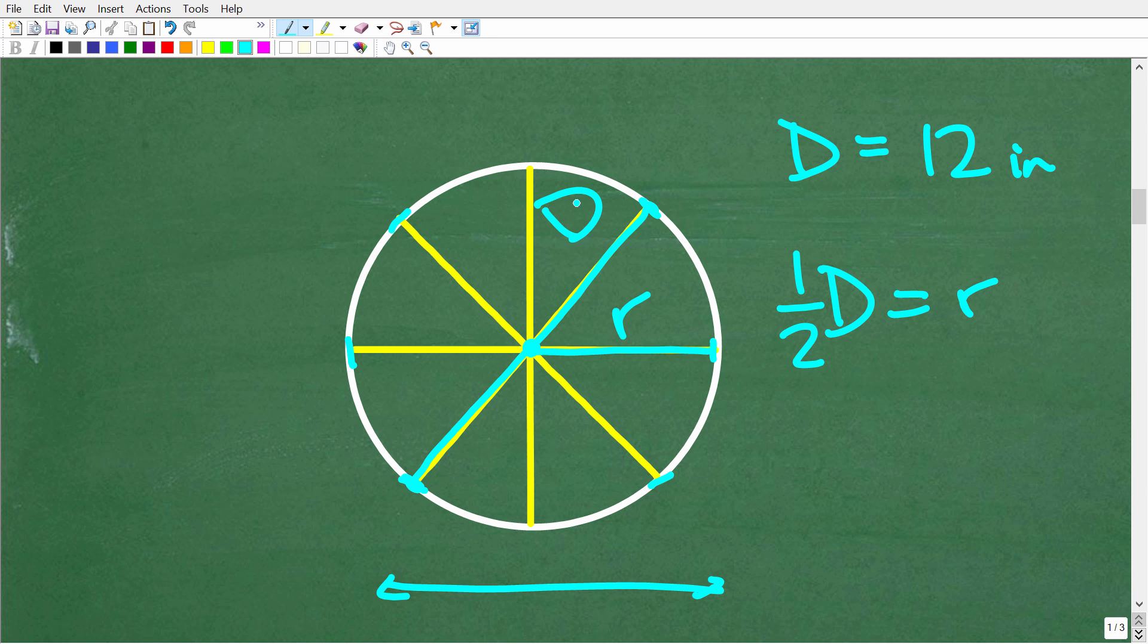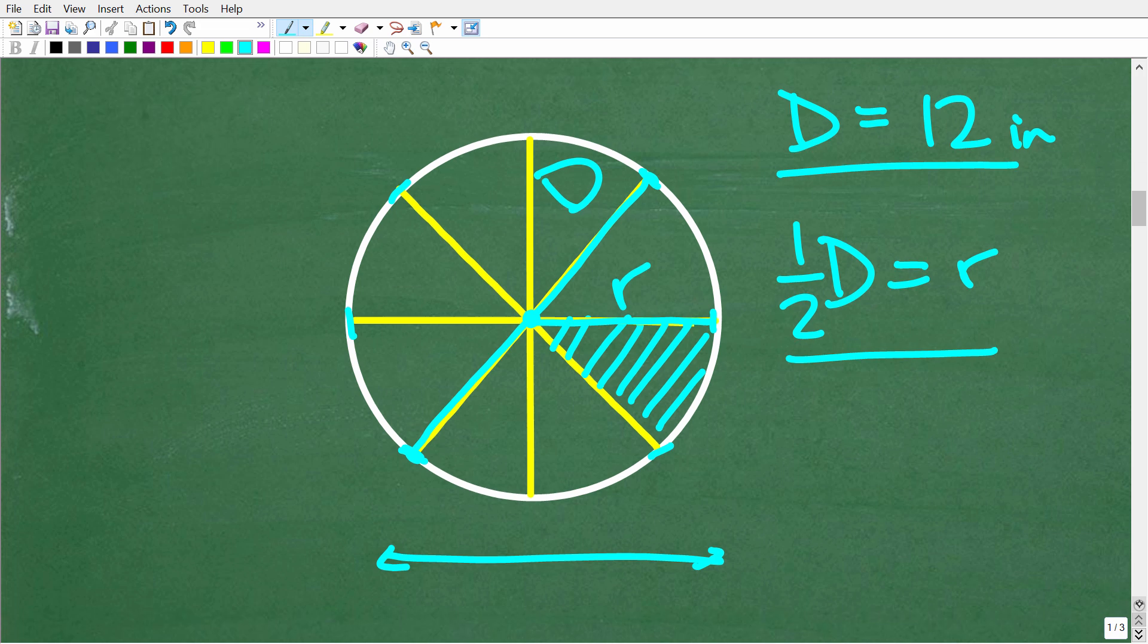Now this is important because we're looking for the area of one of these slices and in order to calculate the area we're going to need to understand the diameter and the radius. So I'm going to give you a formula here that maybe some of you forgot but it's the formula for the area of a circle. So the area of a circle is equal to pi r squared.